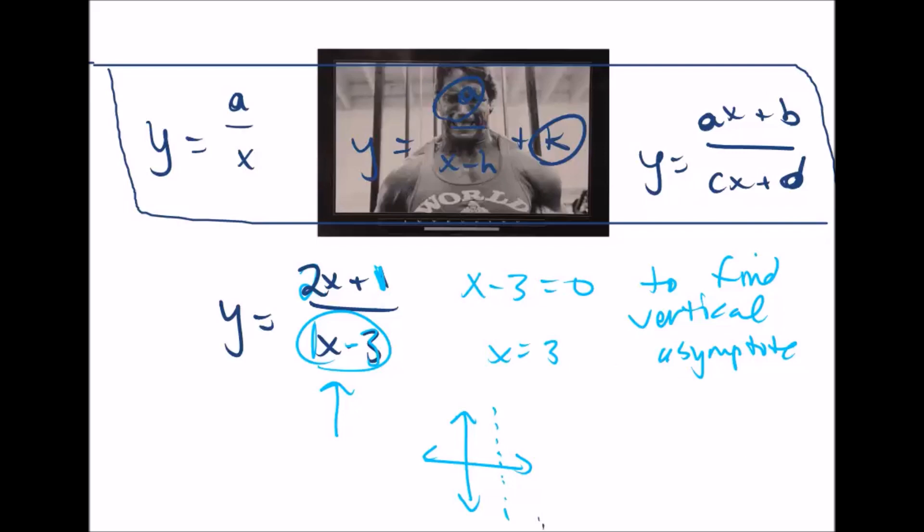So that's how we find the vertical asymptote of x equals 3. To find the horizontal one, you've got to use this equation, y equals a divided by c. So that's something you probably want to write down and memorize, because that's something new.